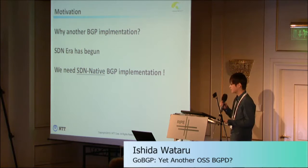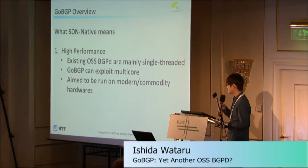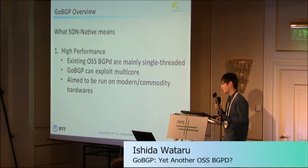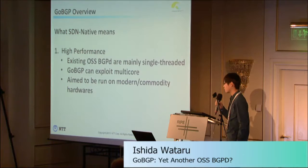What SDN-native means for us: the first is high-performance. Existing open source BGP daemons are mainly single-threaded, so they can only exploit one CPU core. GoBGP can exploit multiple cores thanks to the Go language, and aims to run on modern commodity hardware which has many CPU cores and tons of memory.